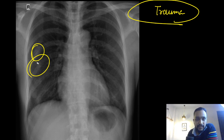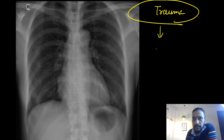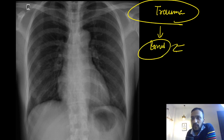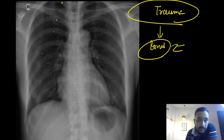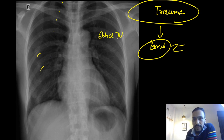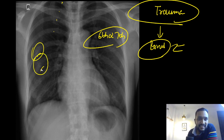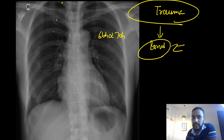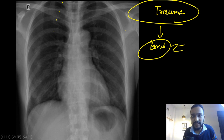The learning point is: always have a look at the bones, and always ask for a history of fractures. In this patient we can see there is a fracture of the second, third, fourth, fifth, sixth, and seventh rib. Try to count the posterior ribs and you will find there is a fracture of the sixth and seventh rib in this patient. This is a subtle abnormality which many students miss while reporting chest X-rays.